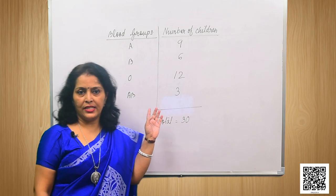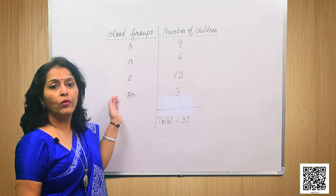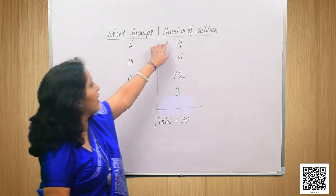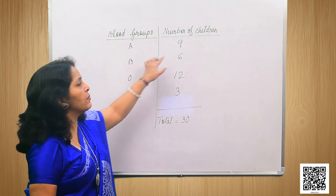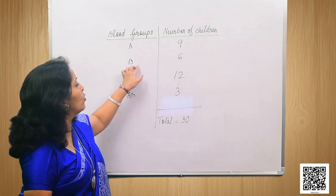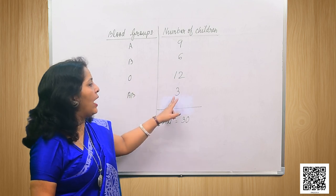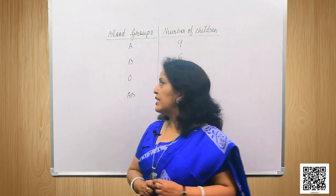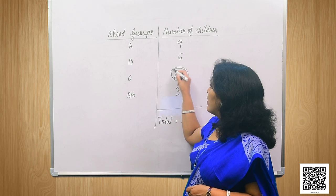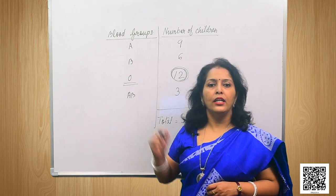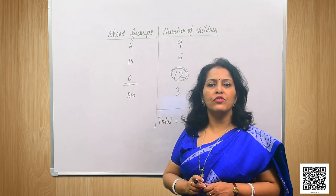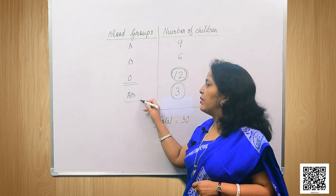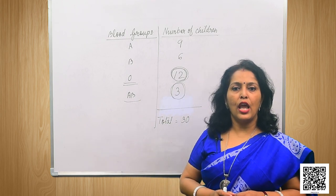The frequency table has four blood groups: A, B, O, and AB. There are 9 children with group A, 6 with group B, 12 with group O, and 3 with group AB. The most common blood group is O, as it appeared a maximum of 12 times. The rarest blood group is AB, which appeared only 3 times.